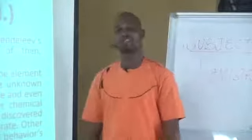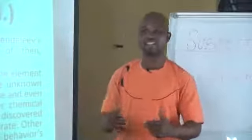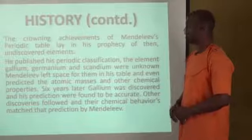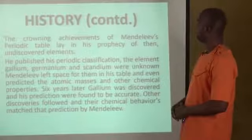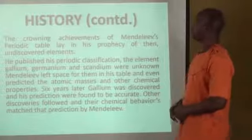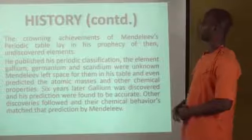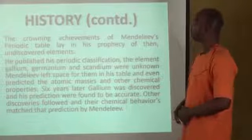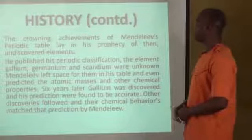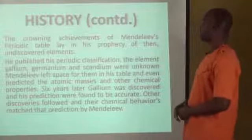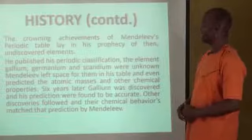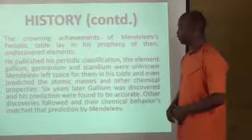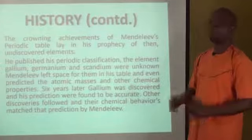Crowning his achievement is the fact that he was able to prophesy or predict seven elements that were not in existence, and he was able to place them on their groups as well as give their properties. The elements gallium, germanium, and scandium were unknown. Mendeleev left space for them in the periodic table and even predicted the atomic masses and other chemical properties. Six years later, gallium was discovered and his predictions were found to be accurate. Other discoveries followed and their chemical behavior matched the prediction of Mendeleev.